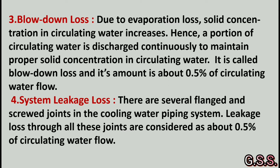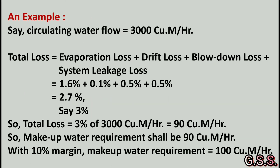The fourth one is system leakage loss. There are several flanged and screwed joints in the cooling water piping system; leakage through all these joints is considered as about 0.5 percent of circulating water flow. Now, for an example, say circulating water flow equals 3000 cubic meters per hour.